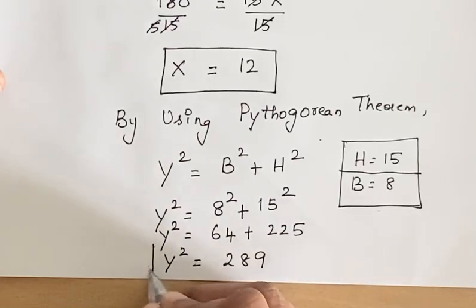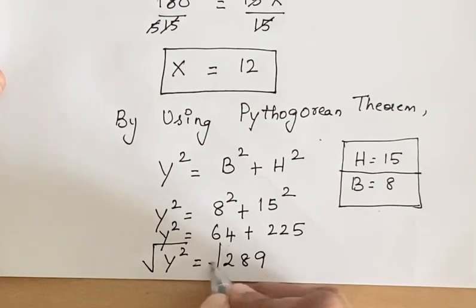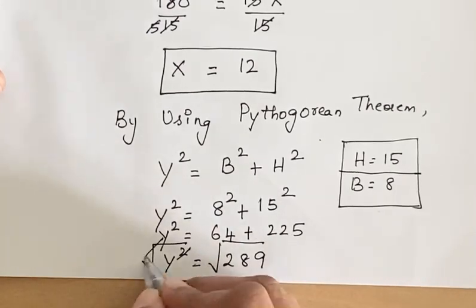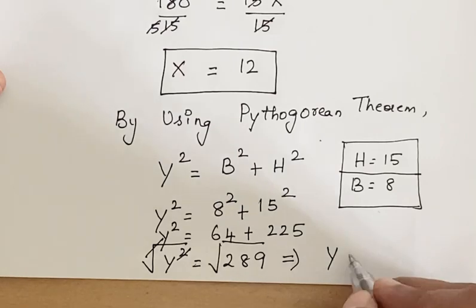Now let us take square root on both sides. So if this and this cancel out, we get y equals 17.